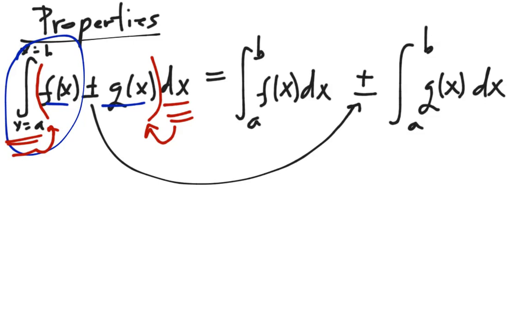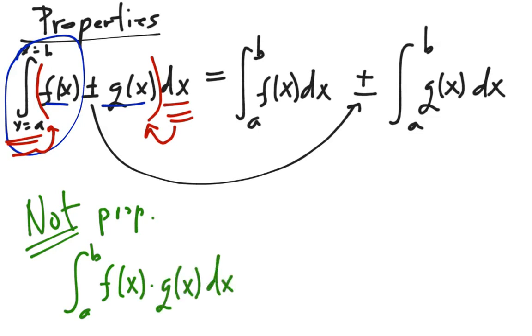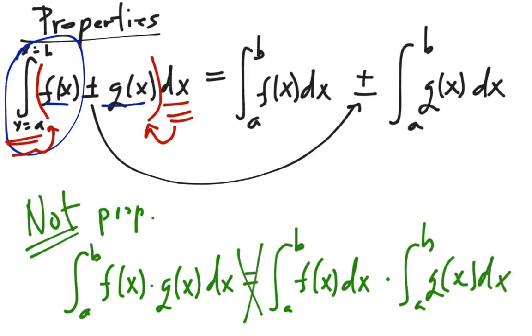The next property is not a property. Do not ever, ever do this. It's just like when you do the product rule wrong and you kill kittens. Here is a not property. Okay? It's not a property. Don't ever do this. Integral from a to b of f of x times g of x. And the temptation here is to just multiply the two integrals. Okay? Like the integral from a to b of f of x dx times the integral from a to b of g of x dx. Do not ever do this. These are not equal. You will kill kittens and they will be sad.